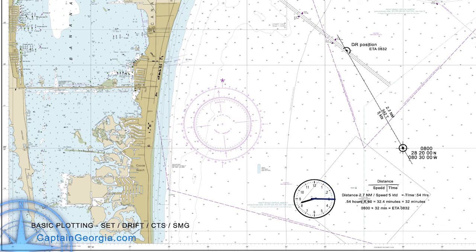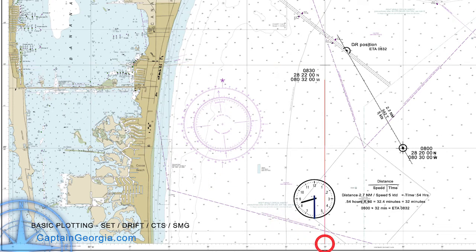We know it's going to be about a half an hour, but at 8:30 we take another position fix. We get our latitude on the left, our longitude on the right. We mark our position at 8:30 of 28° 22' 00" north, 080° 32' 00" west. And we find we are here — we missed. We're not at our DR position. That's because of set and drift, assuming of course we maintained our proper heading.